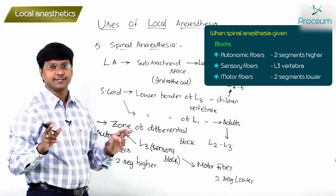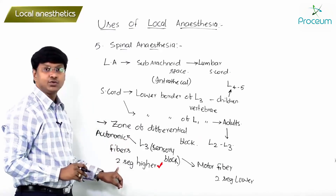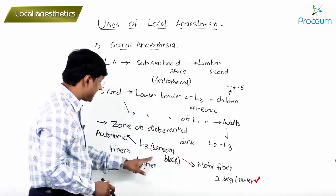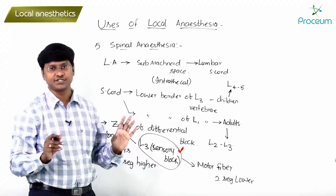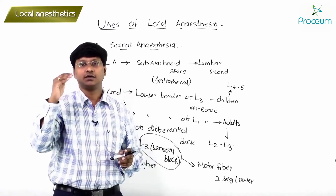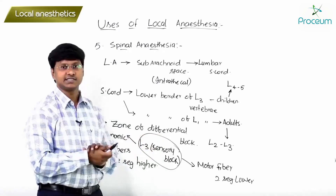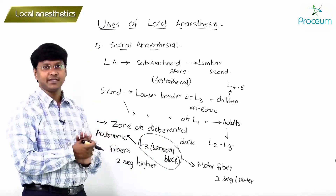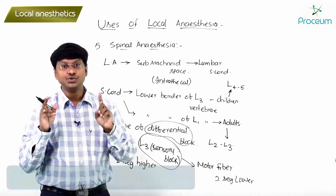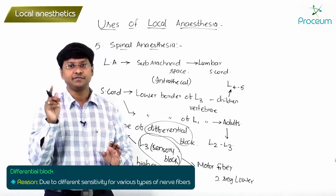This is called differential block: in spinal anesthesia, autonomic fibers are blocked two segments higher and motor fibers are blocked two segments lower than the sensory block. This occurs due to the different sensitivity of various types of nerve fibers.